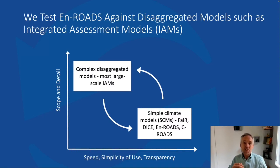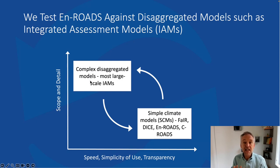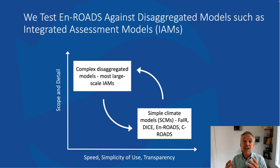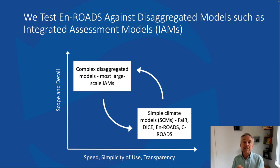On this diagram, complex disaggregated models — most large integrated assessment models — are in the upper box. They're high on scope and detail but low in speed, simplicity of use, and transparency. We, with En-ROADS, belong in a class of models called simple climate models. There are others like FAIR and DICE, and they are really high on speed, simplicity, and transparency, but really low on scope and detail. They're highly aggregated.